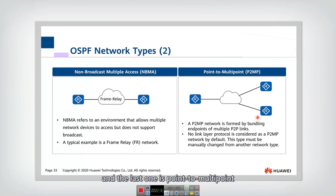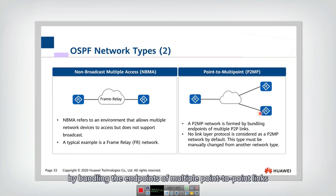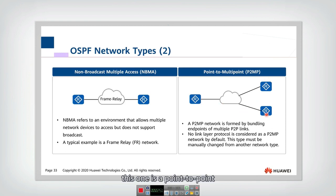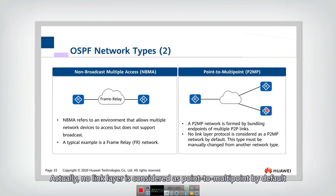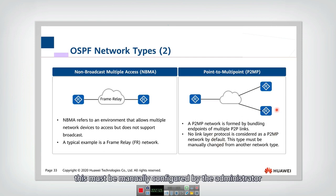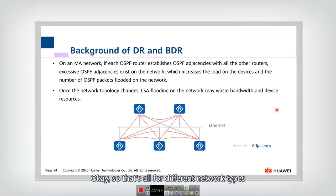The last one is point-to-multipoint. A point-to-multipoint network is formed by bundling the endpoints of multiple point-to-point links. If this one is a point-to-point and this one is a point-to-point, bundling these two links together makes it point-to-multipoint. No link layer is considered as point-to-multipoint by default — this must be manually configured by the administrator. That's all for the different network types.